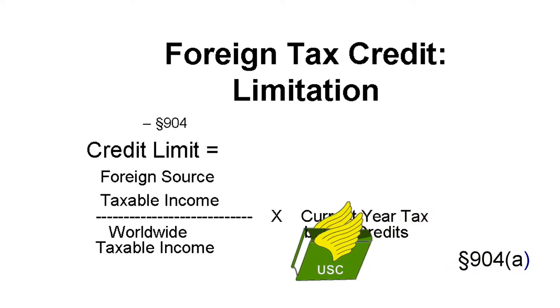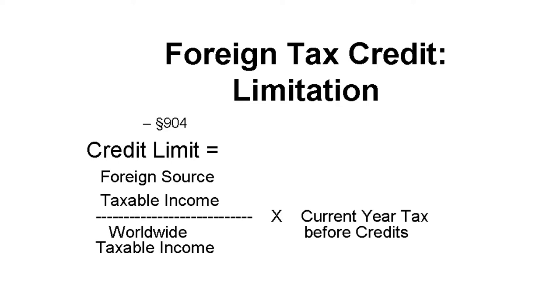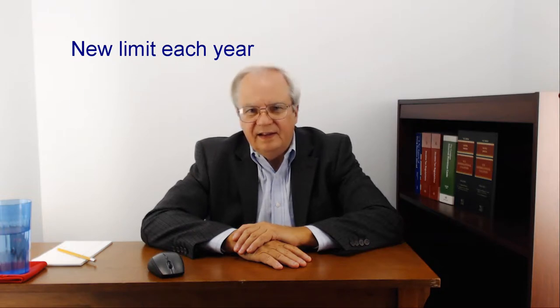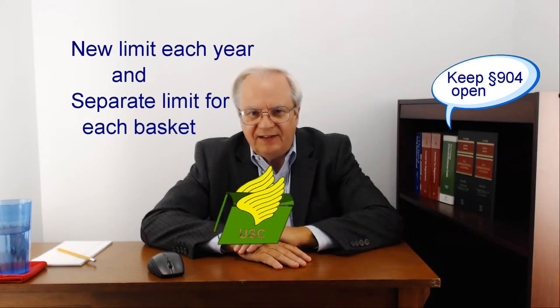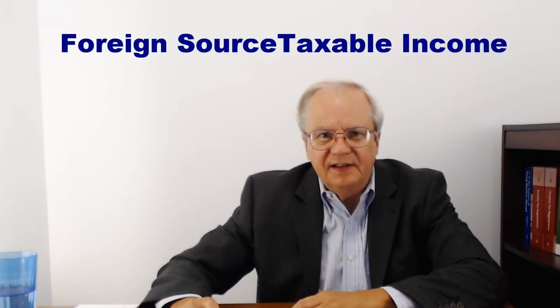The foreign tax credit is limited to the part of U.S. tax caused by net foreign source taxable income. The limitation is expressed by a formula and is computed separately for each year the taxpayer claims a credit. It is also computed separately for each basket. In every computation, the key is foreign source taxable income.